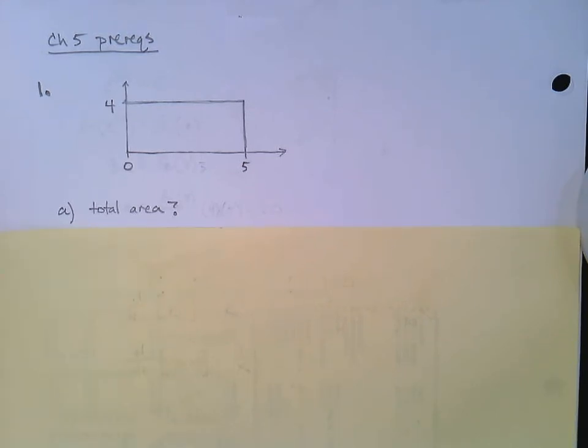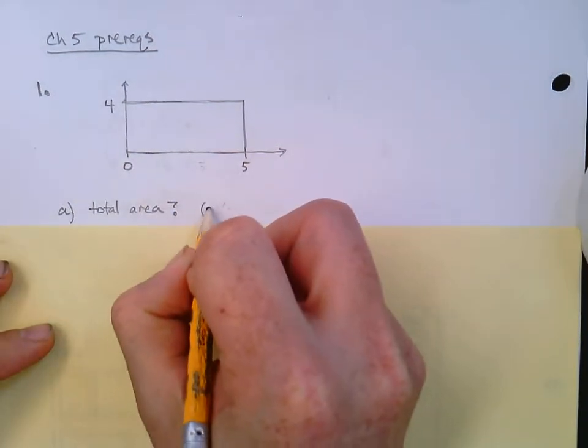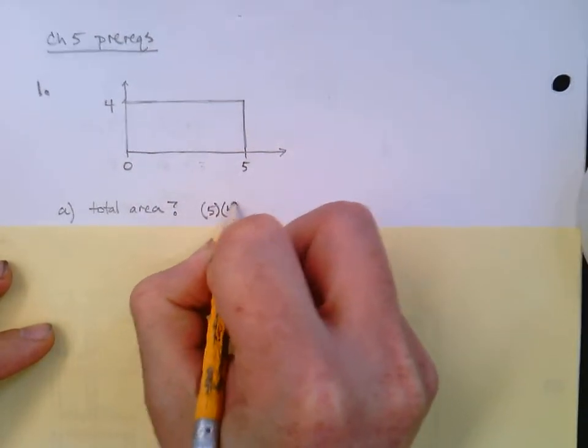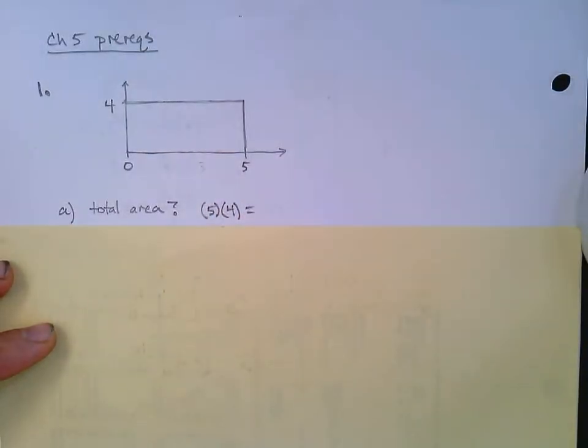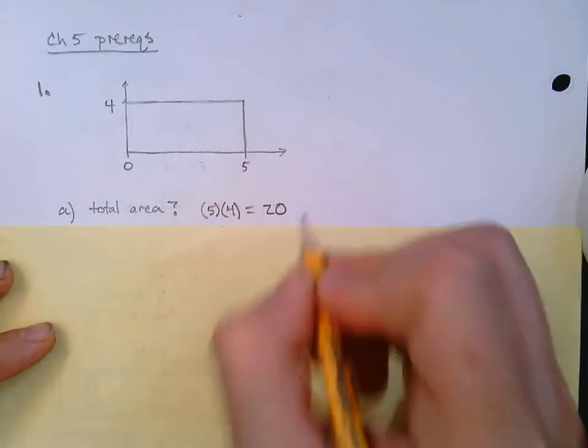Why are we talking about area when where this is leading is in calculating probabilities? So it turns out in the continuous random variable, we think of a lot of graphs and areas of graphs. And so this is kind of warming us up. So what is the area of that rectangle? Well, base times height, right? 5 times 4 would be the area of our rectangle, which in this case is 20. We don't need to worry about units. We'll just say it's 20.